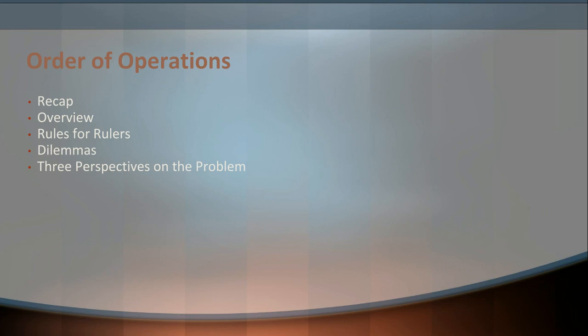Here's what we're going to do today. We'll start with a brief recap, then open with an overview and sample scenarios to get our brains in the right headspace. We'll talk about what one of the videos referred to as the rules for rulers, looking at the supposed political realities of leading. We'll also briefly discuss moral dilemmas and then look at three different approaches to solving the problem of dirty hands — not removing it as an issue, but better understanding it as a theoretical puzzle.